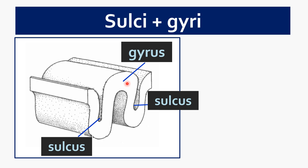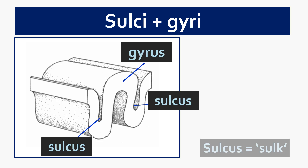If you're new to neuroanatomy, these are probably not terms with an intuitive meaning unless you have a background in the classics. A simple way to remember them: sulcus is like sulk — when we sulk, we fall down, we get low. Sulcus then is a groove or a fissure.